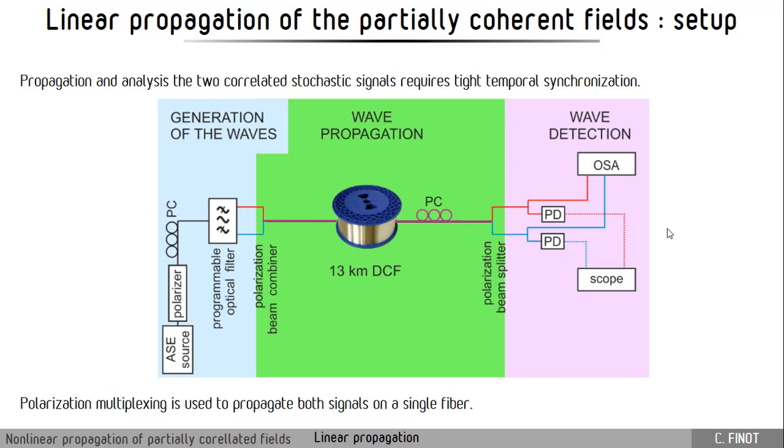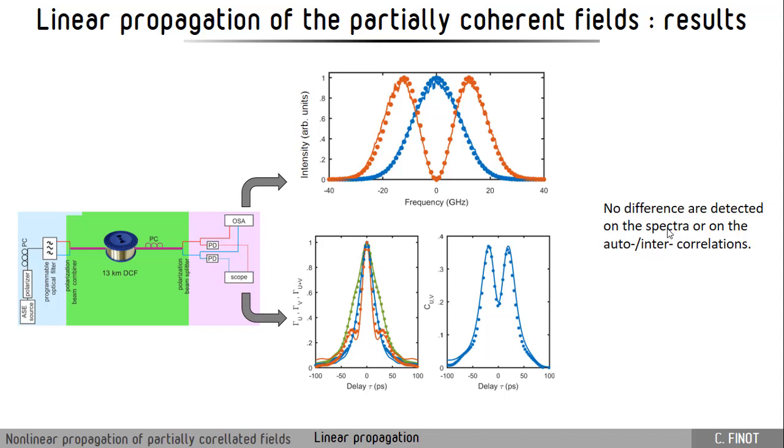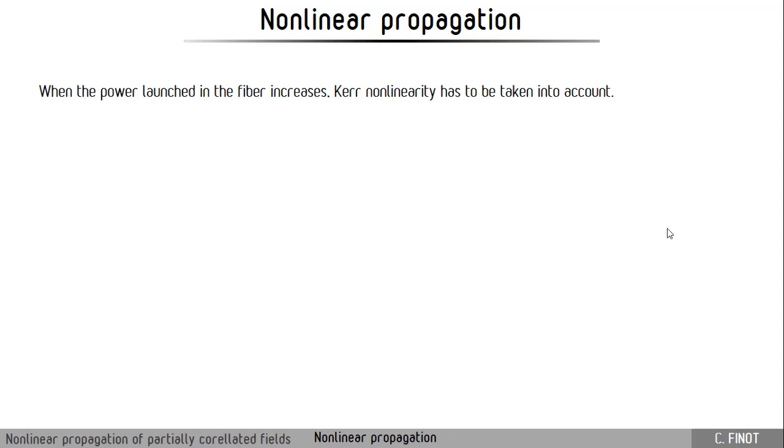The polarization multiplexing is really the key of the setup. To test the linear propagation we have used a highly dispersive fiber which is a dispersion compensating fiber which is 14 km long. The result that we have is that the propagation does not affect at all the different properties of the two correlated fields. We still have the same spectrum, we still have the same autocorrelation, and we still have the same cross-correlations.